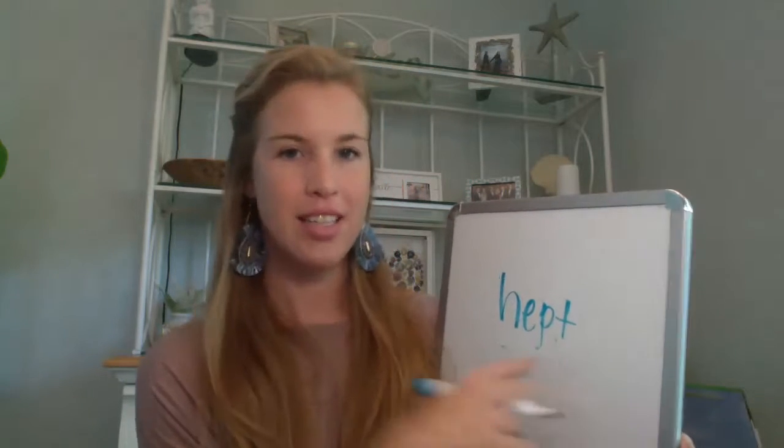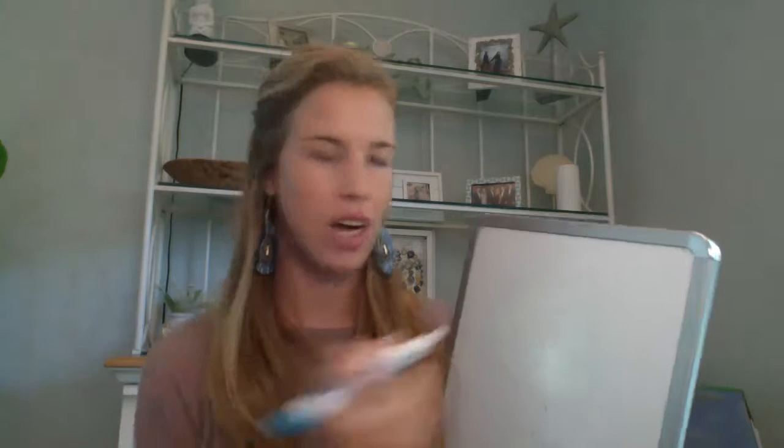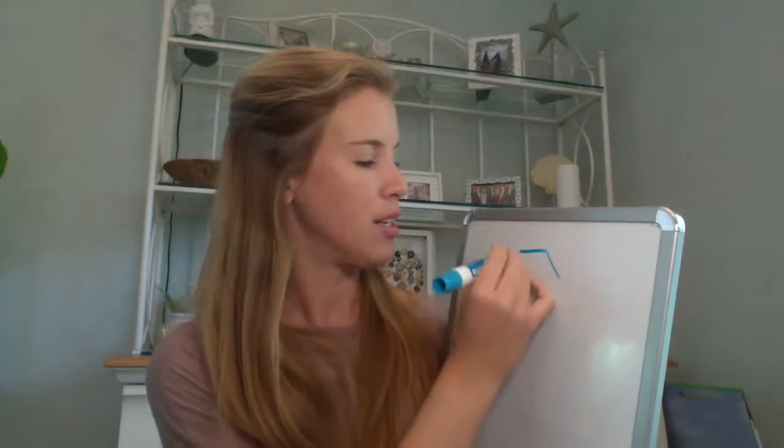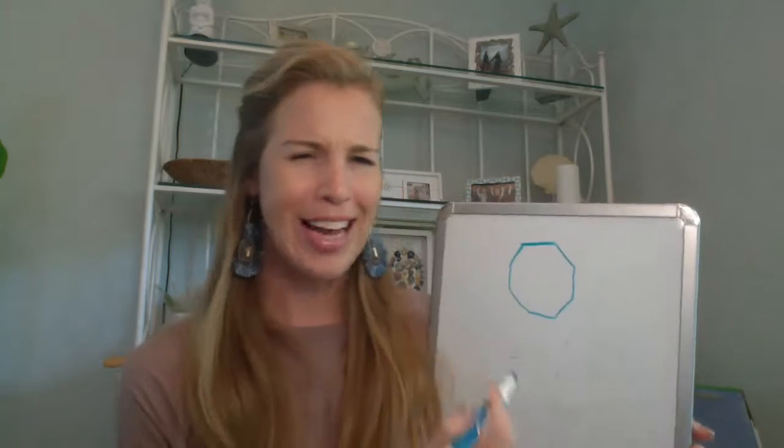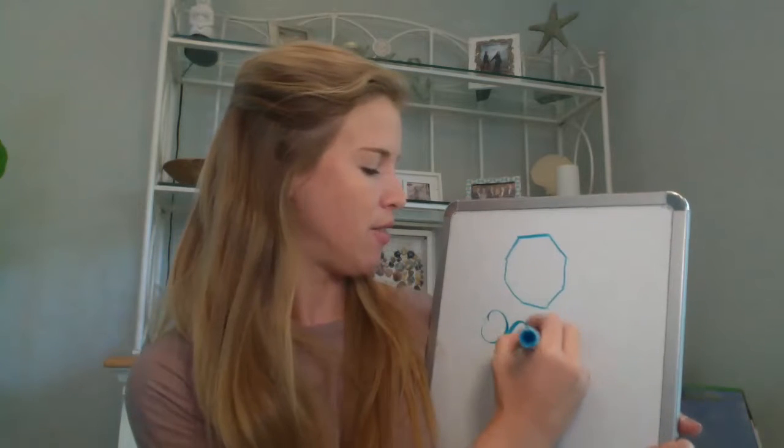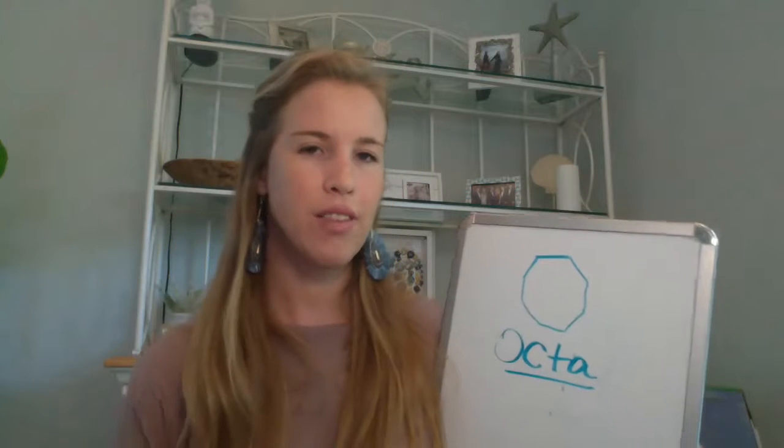We did mention a heptagon — we don't need to learn that one, but hept means seven sides. We are going to talk about an octagon though. The prefix stands for eight. Think of an animal that has 'octa' in it — an octopus. How many legs does an octopus have? Eight. So that's a way to remember that.